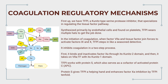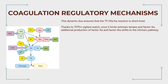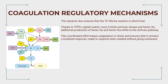Protein S gives TFPI a helping hand and enhances activated factor Xa inhibition by TFPI tenfold. This dynamic duo ensures that the tissue factor, factor VIIa, and Xa reaction is short-lived. Thanks to TFPI's vigilant watch, once it limits extrinsic tenase and factor Xa, additional production of factor Xa and factor IXa shifts to the intrinsic pathway, keeping coagulation localized as a controlled response.